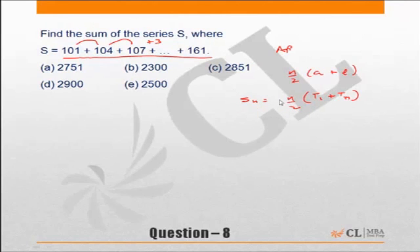What we need out here is the number of terms. The first term and last term are already given to us, 101 plus 161 into n by 2, which means we need to find the number of terms.